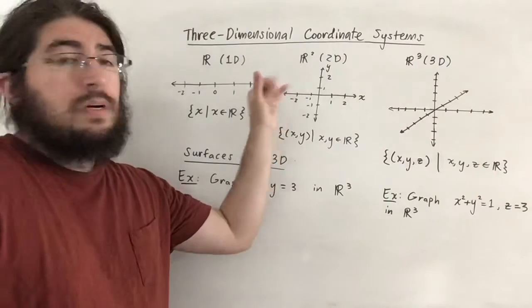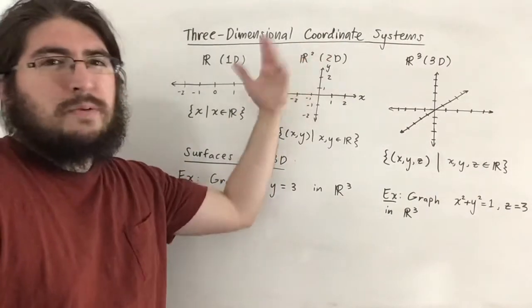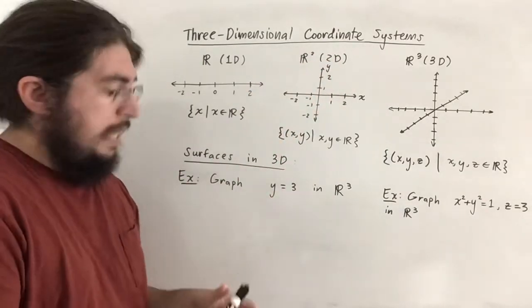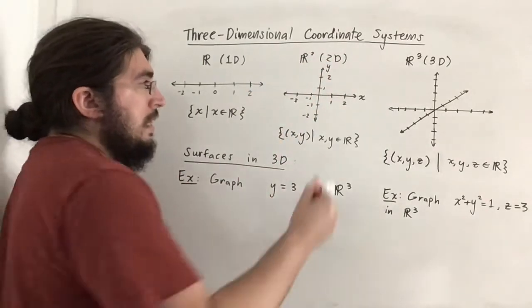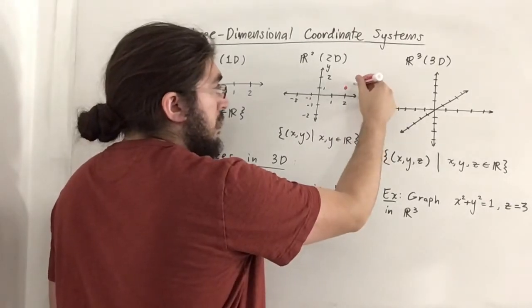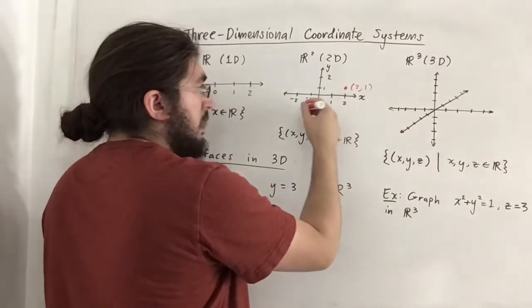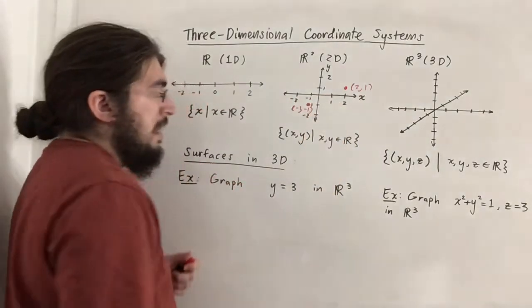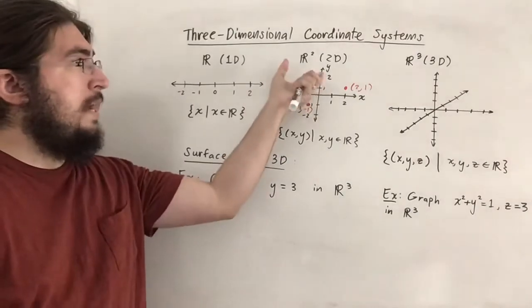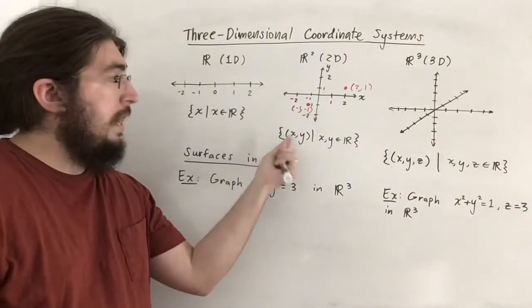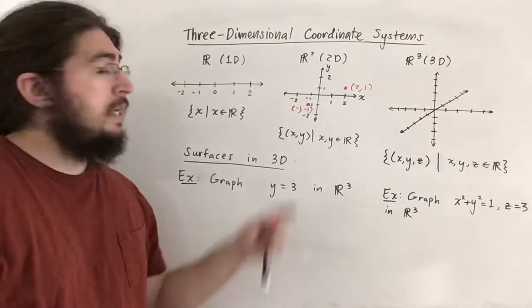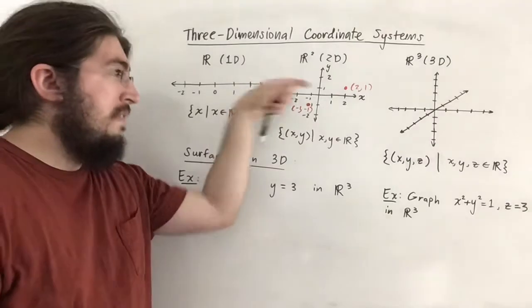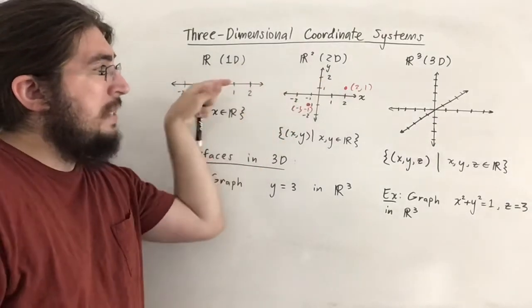Now R² is really in two dimensions, so it's known as the xy-plane. Here you plot a point, for example the point 2 comma 1, or the point negative 1 comma negative 1. Any element of R² is a point x comma y where x and y are each real numbers. So here instead of just one real number line we actually have two, and we label them the x dimension and the y dimension.